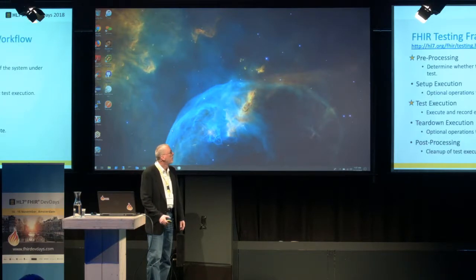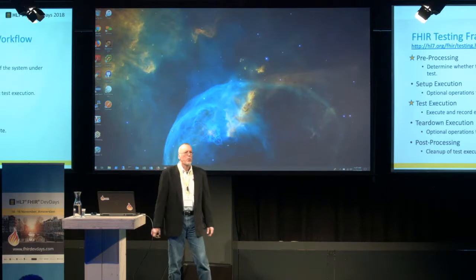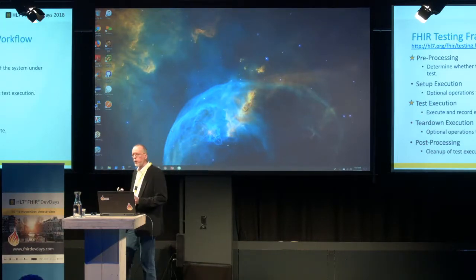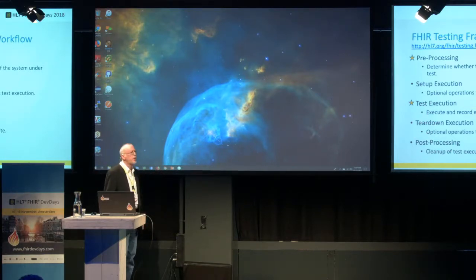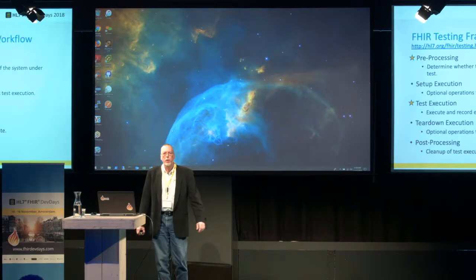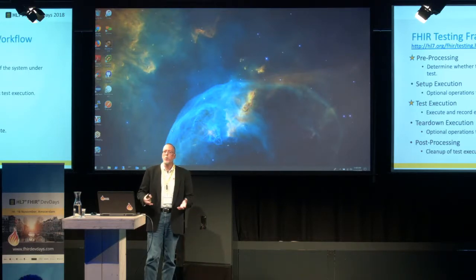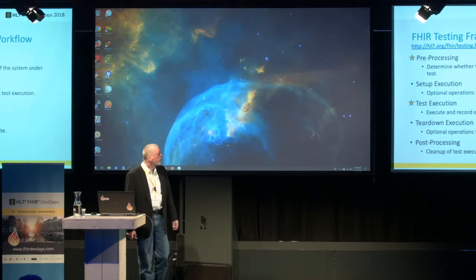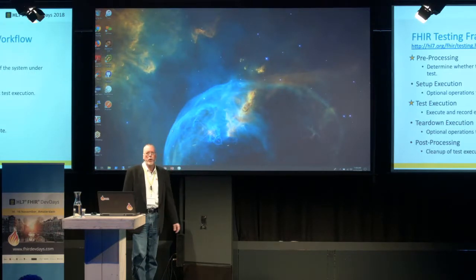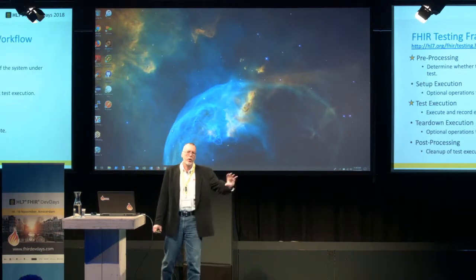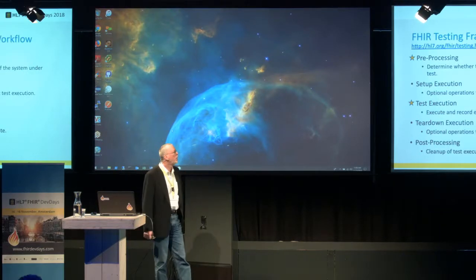Let's take a look at our test execution workflow. In the testing framework, we have what's called a FHIR test engine. That test engine has to follow a certain path through the processing of the TestScript. There are five different steps: preprocessing, setup, test, and teardown executions, and then finally post-processing. The execution steps are the ones we have control over. The test engine is always going to be doing the pre- and post-processing for us.